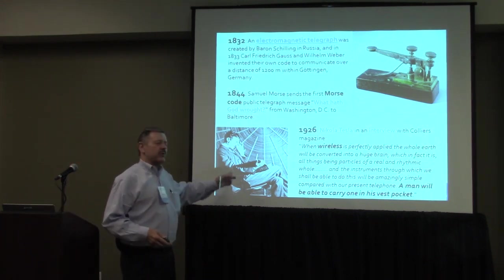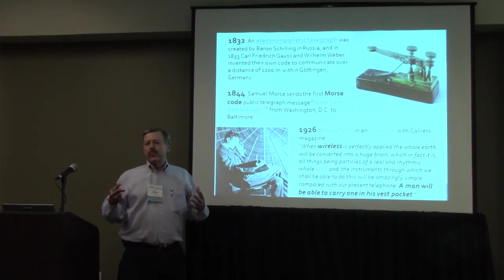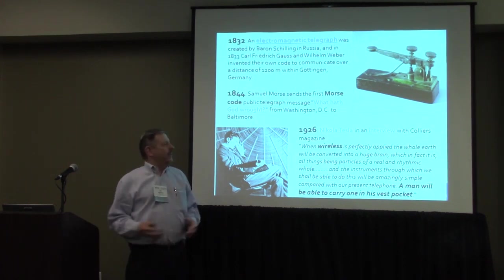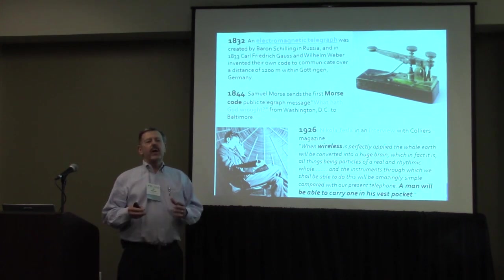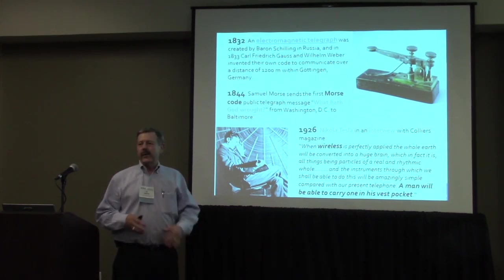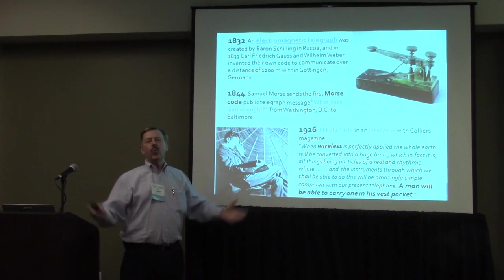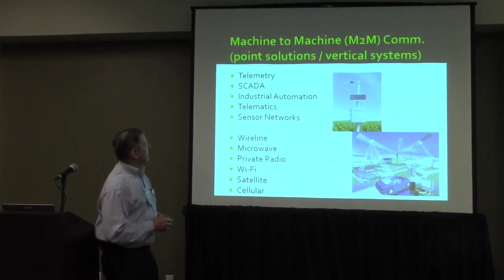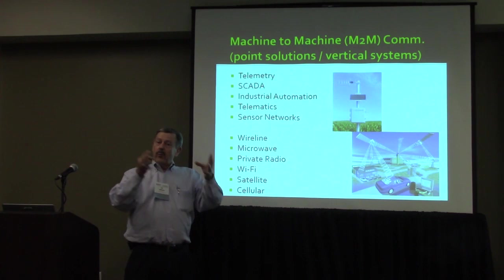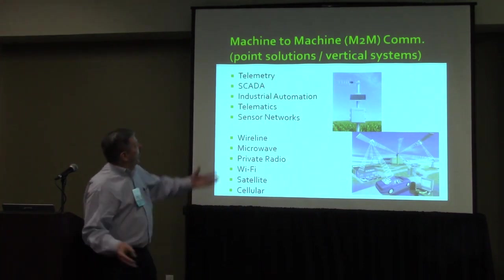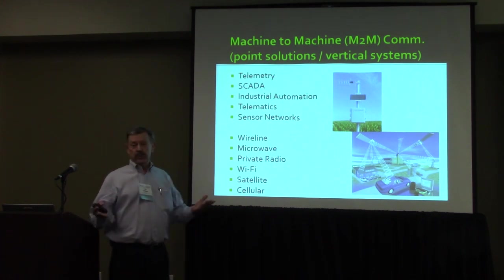I want to give credit to Nikola Tesla. He was a very innovative and prophetic man. He said back in an interview that someday we'll have devices in our pocket that can get information and control many things in the world. Internet of Things used to be called machine-to-machine communications, and before that it was called telemetry, SCADA, industrial automation, telematics, and sensor networks.